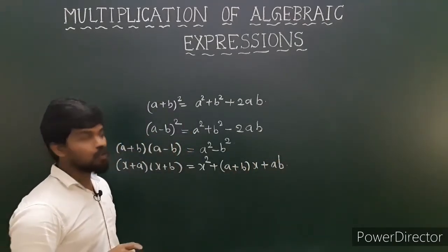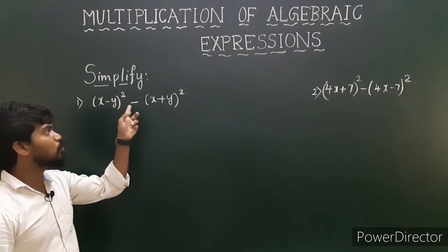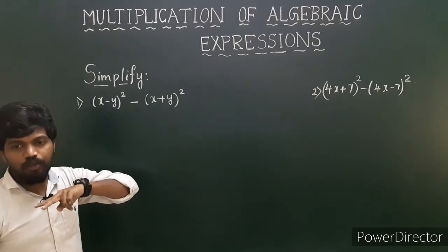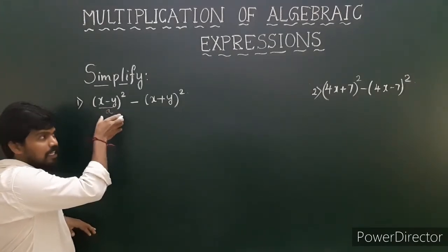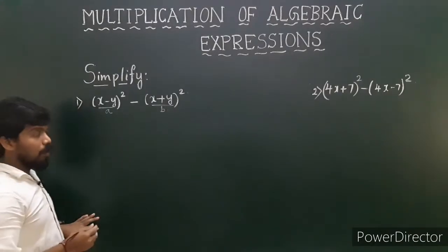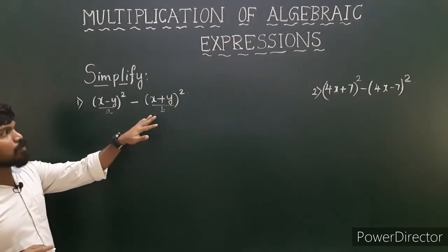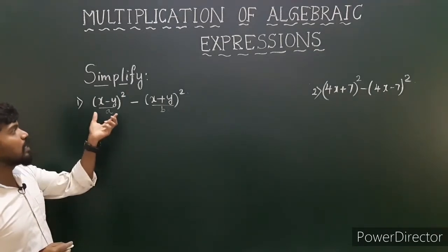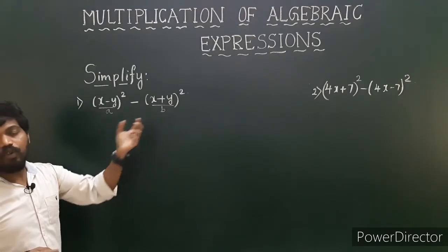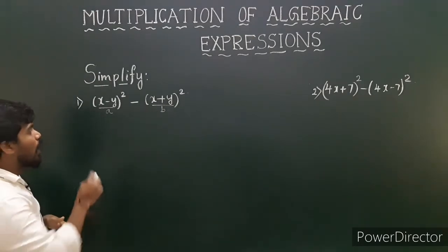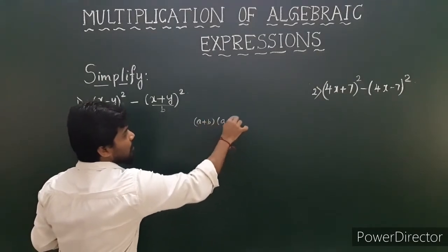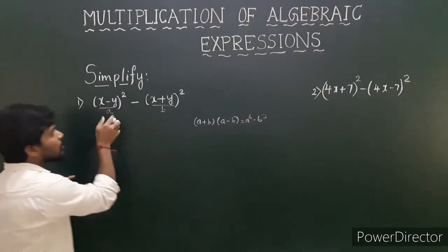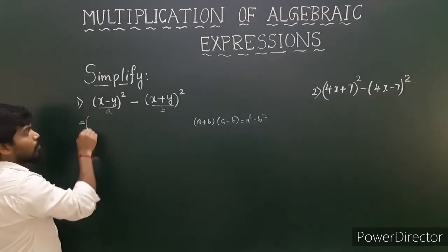Now we will simplify some problems using these four identities. The first problem: x minus y whole square minus x plus y whole square. You can do it by two methods. In the first method, take x minus y as a and x plus y as b. You know that a plus b into a minus b is equal to a square minus b square. So write this as a plus b into a minus b using the third identity.